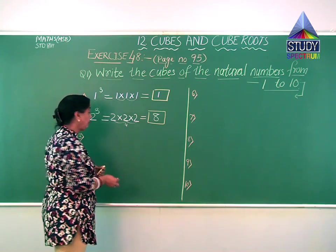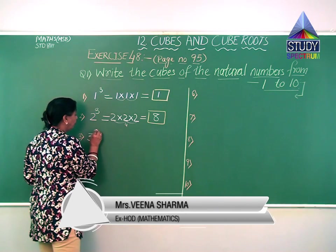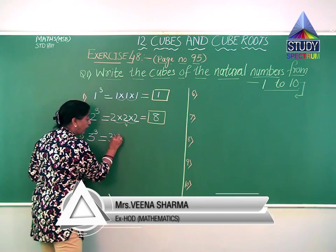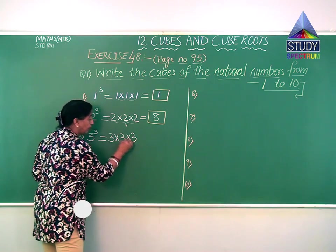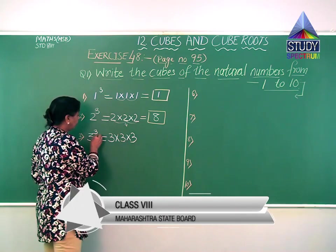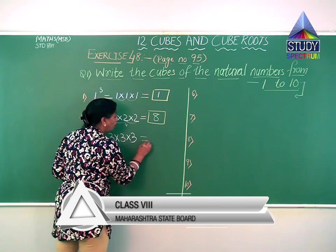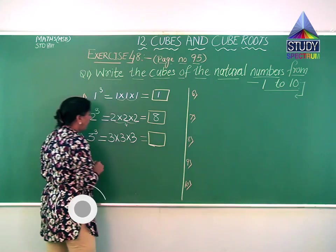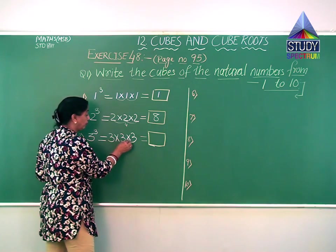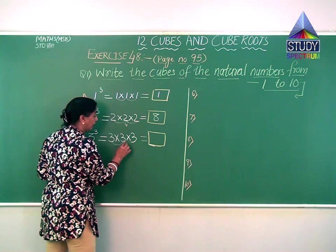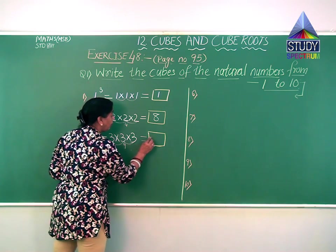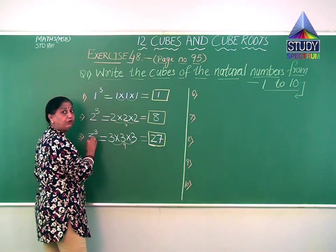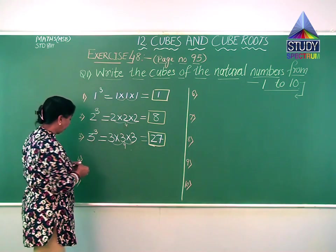The next natural number is 3. To find the cube, I put the power 3, which means you multiply 3 three times: 3 into 3 into 3. Finding the product: 3 into 3 gives me 9, and 9 into 3 gives me 27. So 27 is the cube of 3.